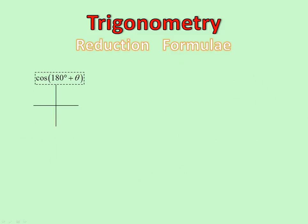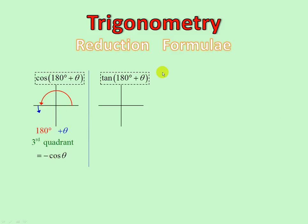180 plus theta — nudged into the third quadrant. Now, cos of a third quadrant is negative. So it becomes negative cos theta. Tan of 180 plus theta: 180 nudged on into the third. Tan of a third quadrant is positive. Therefore, positive tan theta.